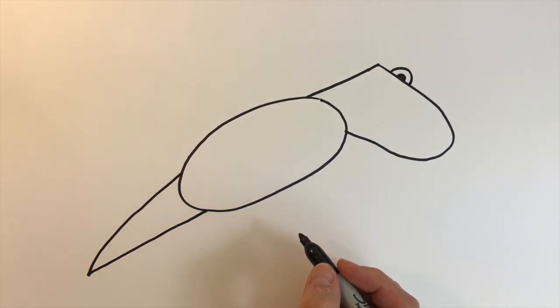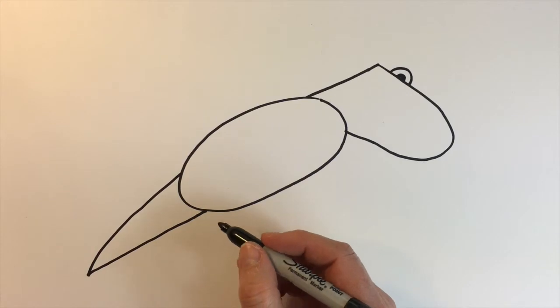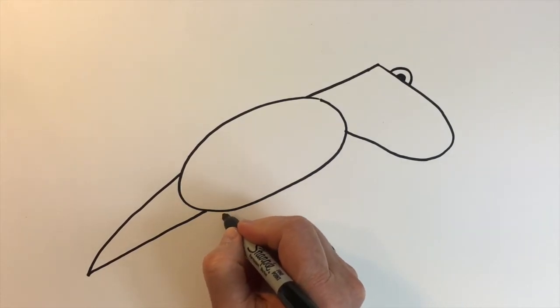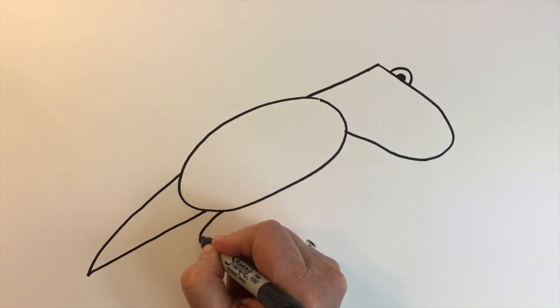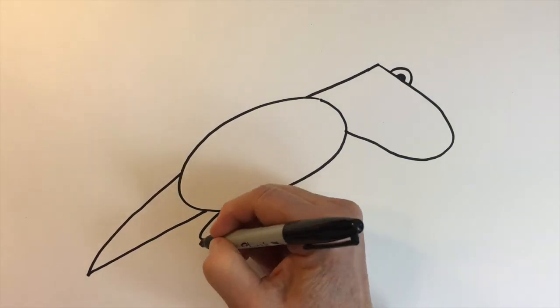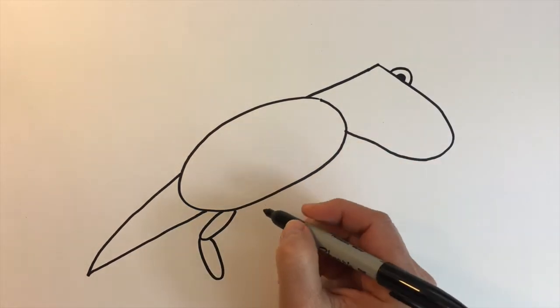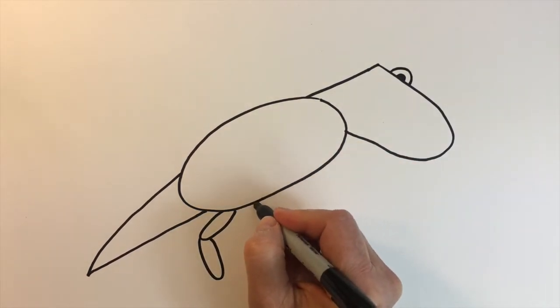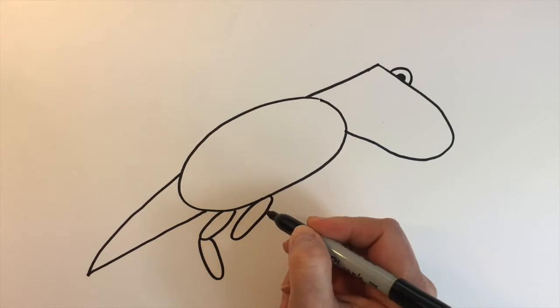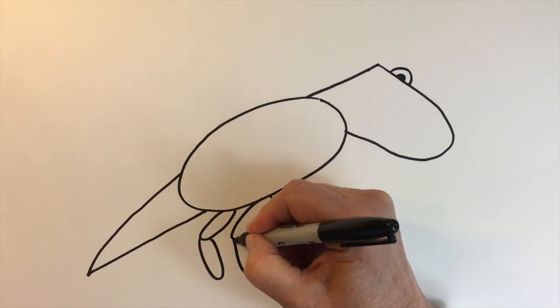And then his legs are going to be close together, and we're going to use ovals for those legs. We'll create the top part that's kind of slanting back, and then the other part slanting towards the front. And another one slanting towards the back, and then the other portion slanting towards the front.